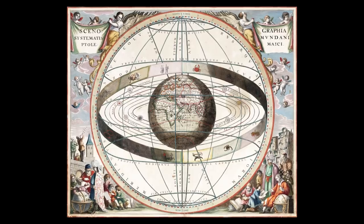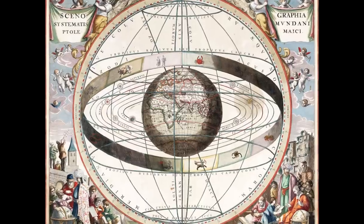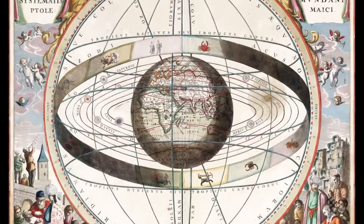The ancient Greeks added the Sun and the Moon to their list of planets, but that idea never really caught on.